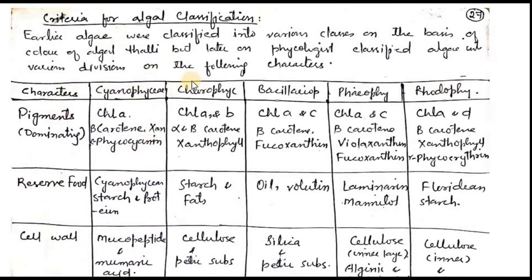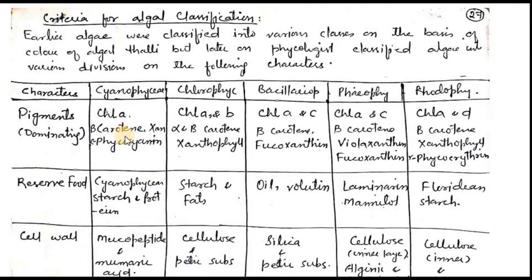In algal classification, we can see that chlorophyll pigment is common in all groups. But the difference is that phycocyanin has been reported only in Cyanophyceae. It gives a bluish color, and because of this, this algae got the name blue-green algae. So if you find a new algae containing phycocyanin, you can directly place it in Cyanophyceae. Classification on the basis of pigment is one approach, but we should not consider pigment alone.